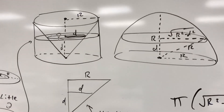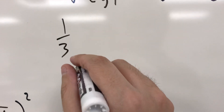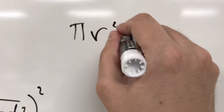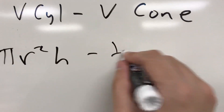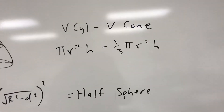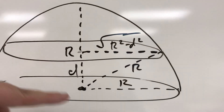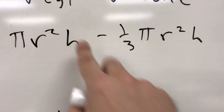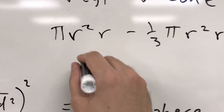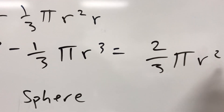Now we just write an expression for the volume of the cylinder with the cone removed. The volume of the cylinder is the area of the base — which is π r² — times the height. The volume of the cone is 1/3 π r² h. But looking back, the height is actually r, the same as the radius of the sphere. So it's π r² · r − 1/3 π r² · r = π r³ − 1/3 π r³, which equals 2/3 π r³.